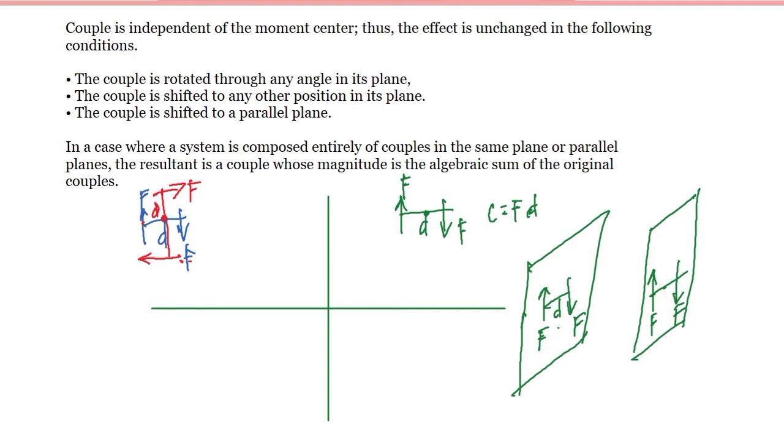In a case where a system is composed entirely of couples in the same plane or parallel planes, the resultant is a couple whose magnitude is the algebraic sum of the original couples. So if we have four systems and we are talking about the same plane or parallel planes, the resultant couple is just the algebraic sum of the original.